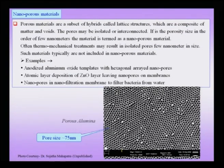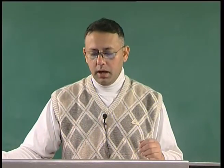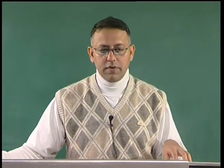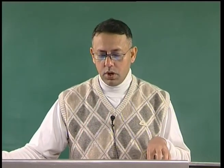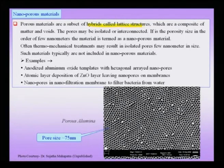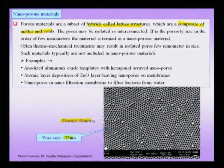We had talked about a composite of air and material, which we called a lattice structure — differentiated from the crystallographic lattice structure. These hybrids are a composite of matter and voids. An example shown here is porous alumina where the pore size is of the order of 75 nanometers. The interconnects between the pores are also of nano scale.